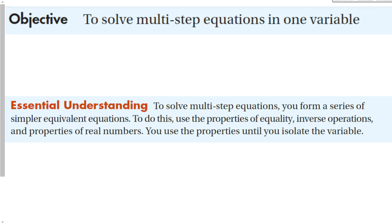To solve multi-step equations, you first form a series of simpler equivalent equations. To do this, use the properties of equality, inverse operations, and the properties of real numbers. Use the properties until you isolate the variable. Our objective for solving equations is always the same: I want to get a variable by itself equal to a number.